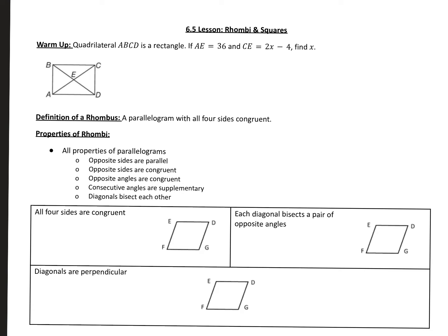These are the lesson notes for today, and we're going to start off with a warm-up on a quadrilateral. We have a quadrilateral A, B, C, D, and it says it's a rectangle. So ABCD is a rectangle.